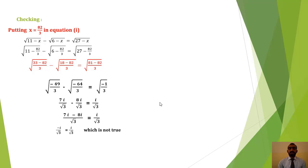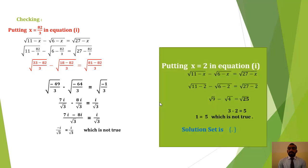Checking x = 2 in equation 1: √(11−2) − √(6−2) = √(27−2), giving √9 − √4 = √25, so 3 − 2 = 5, which means 1 = 5. This is not true. So x = 2 is also not a solution of the given equation. Both values are extraneous roots. Therefore, the solution set of this equation is the empty set.